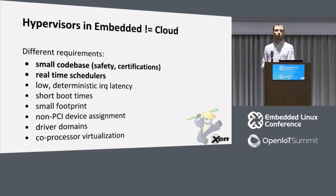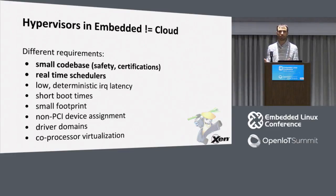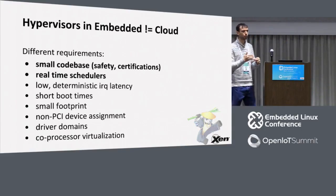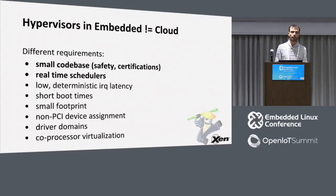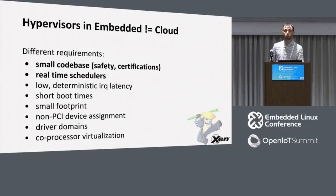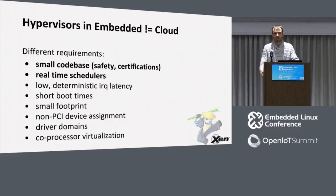In embedded, we have very different requirements. One requirement is real-time support — many of our use cases have at least some soft real-time requirements, if not hard. I don't know of any single hypervisor deployment in the cloud that has any kind of real-time support, because it's just not useful in the cloud. Small code base: if you want to certify your system, the highest privilege execution level where you run the hypervisor needs to be certified. If it's large, it becomes close to an impossible task. Short boot times: if you're in a car and turn on the infotainment system, it has to be immediate. On clouds, usually the server is supposed to be 99.9999% available, so who cares if it takes five minutes to boot?